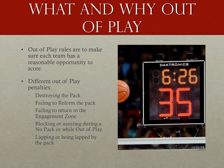I started watching flat track roller derby in 2005, and the idea of packs, pack definition, and engagement zones just didn't exist. This meant that when it became advantageous, one team could just take off and sprint away from the opposing jammer, and there was nothing the other team could do about it. This became known as 'runaway pussy,' and is the kind of thing that can happen when the rule book is only nine pages long.